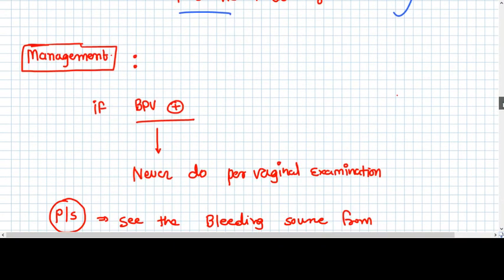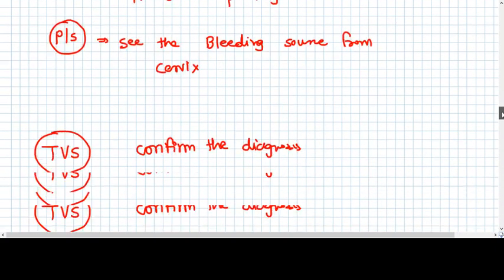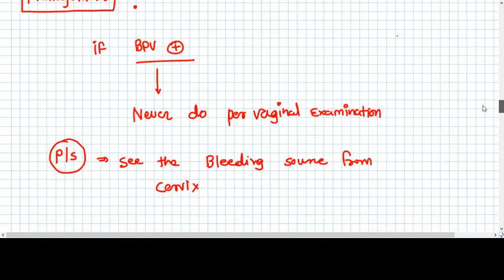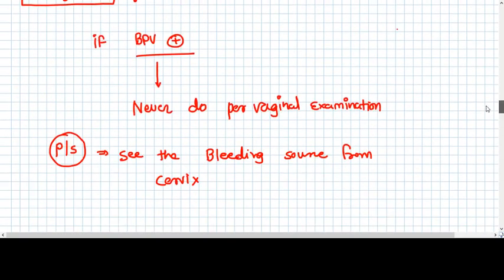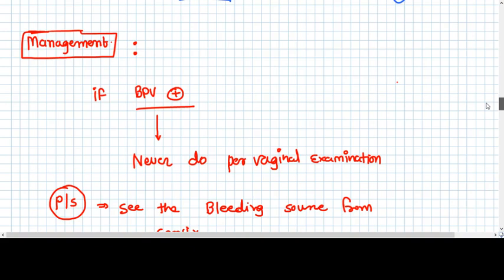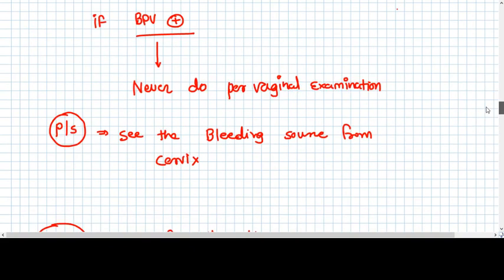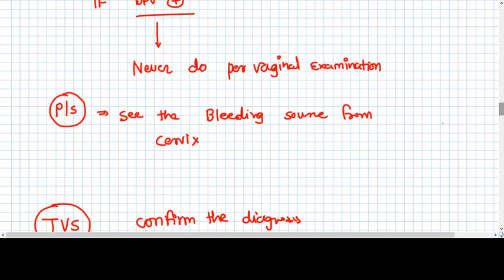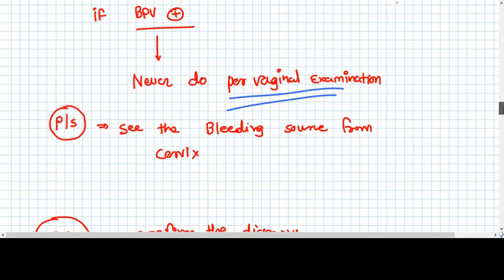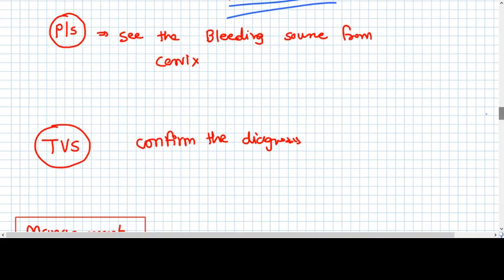When a patient comes with bleeding PV in her late pregnancy, the very important thing you should know is you should not do per vaginal examination. Because if you do per vaginal examination, you can be separating the placenta more and that can result in a very very high bleed that can be very fatal to patient and even fetus. So just have that habit that don't do per vaginal examination. You can do a per speculum examination so that you can confirm that the bleeding is coming from the external os of the cervix. That's why you can see that it is intrauterine bleeding and not from a local source.